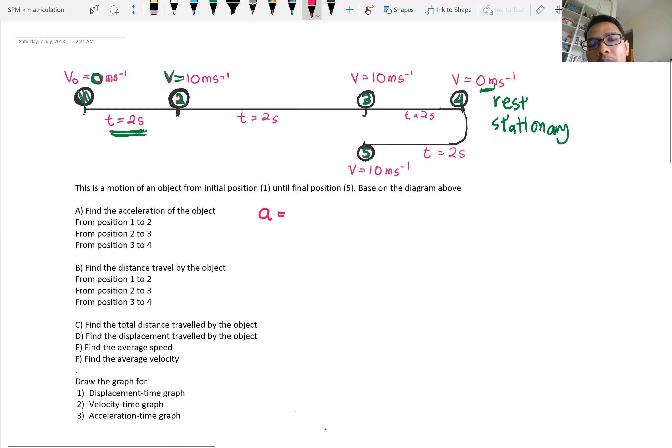So acceleration is given by v minus the initial velocity over time. In SPM, you use v minus u over t but basically this is the same formula. So from position 1 to 2 is 10 minus 0 divided by 2, so the acceleration is 5 ms⁻².